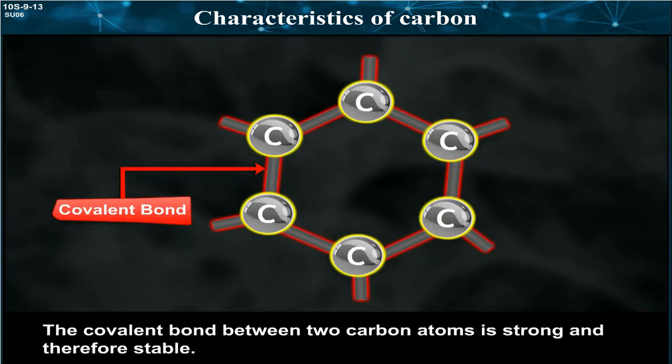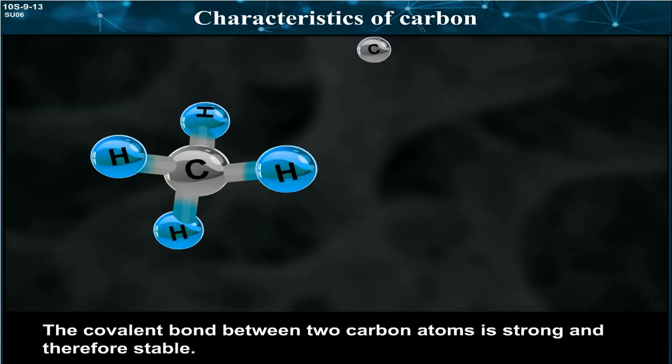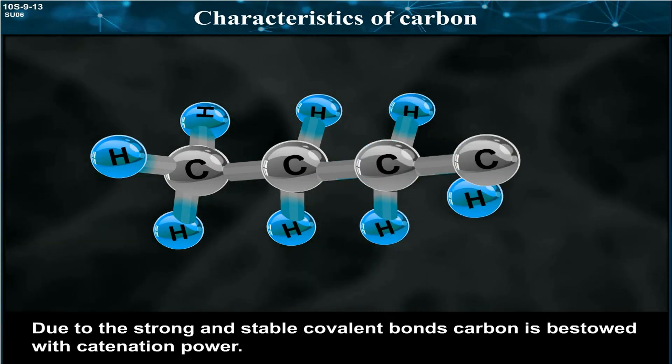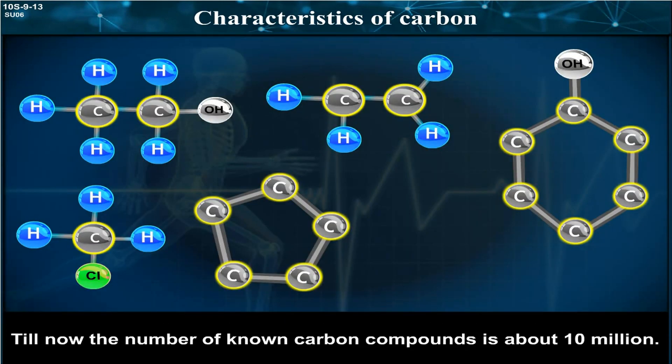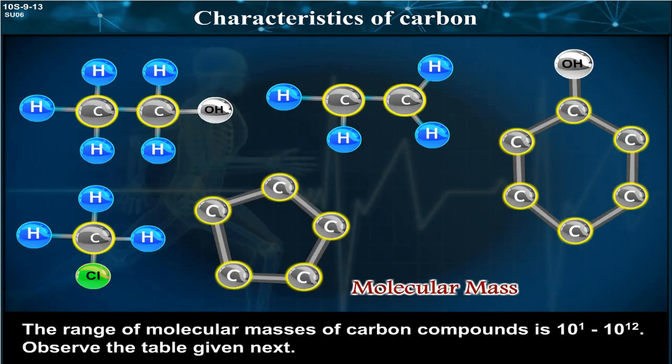The covalent bond between two carbon atoms is strong and therefore stable. Due to the strong and stable covalent bonds, carbon is bestowed with catenation power. Till now, the number of known carbon compounds is about 10 million. This number is larger than the total number of compounds formed by all the other elements. The range of molecular masses of carbon compounds is 10 raised to 1 to 10 raised to 12. Observe the table given next.